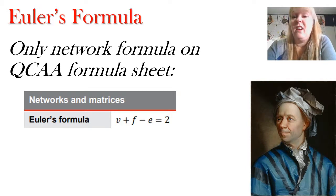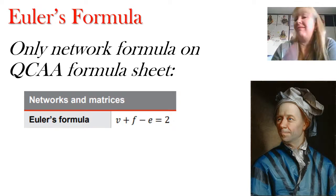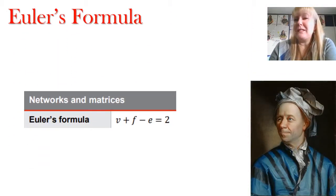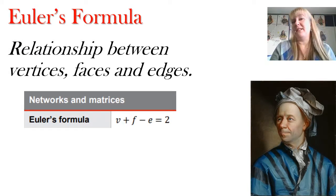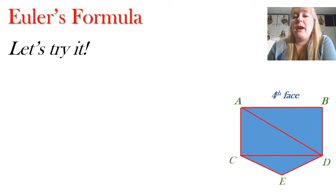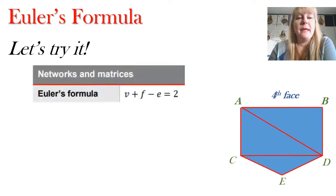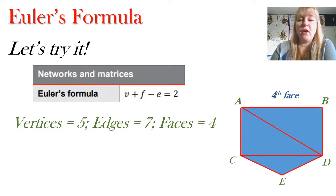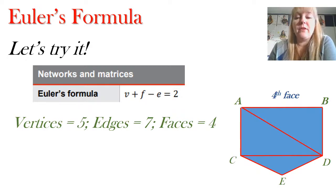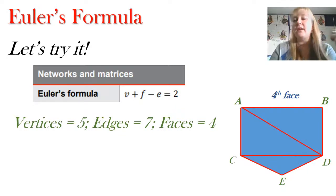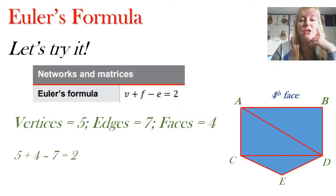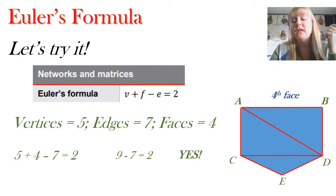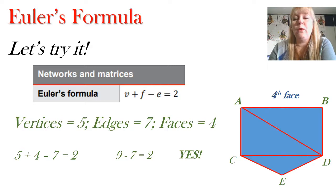The pronunciation isn't really that important — your teacher may pronounce it slightly differently. Now let's try Euler's formula with a simple connected graph. I'll state my variables: I've got five vertices — a, b, c, d, e — seven edges, and four faces. Remember that the outside area space is a face as well. Substituting into the formula: five plus four minus seven equals two. Simplifying: nine minus seven equals two. That's true, so we've proved that Euler's formula works in a simple connected graph.